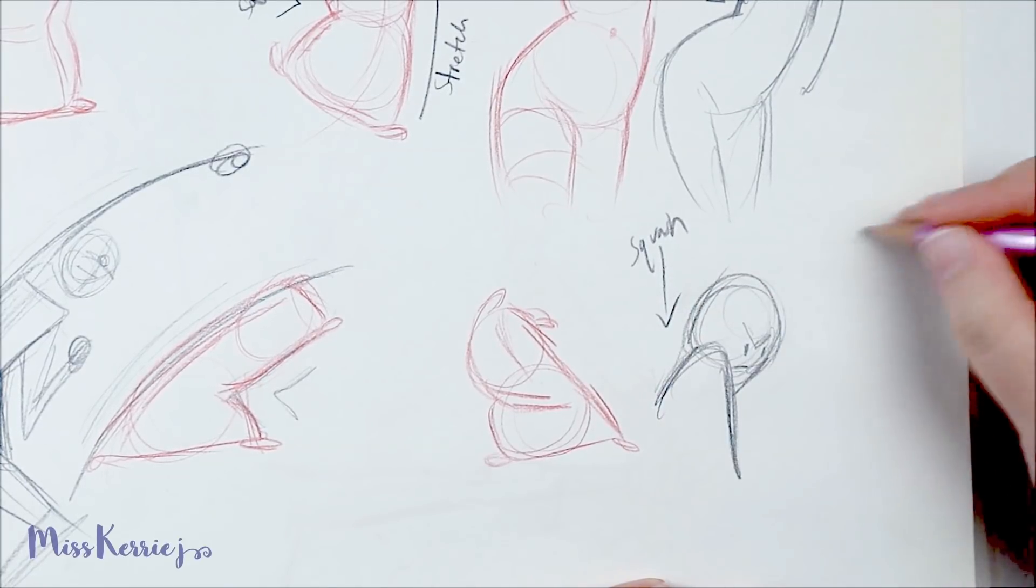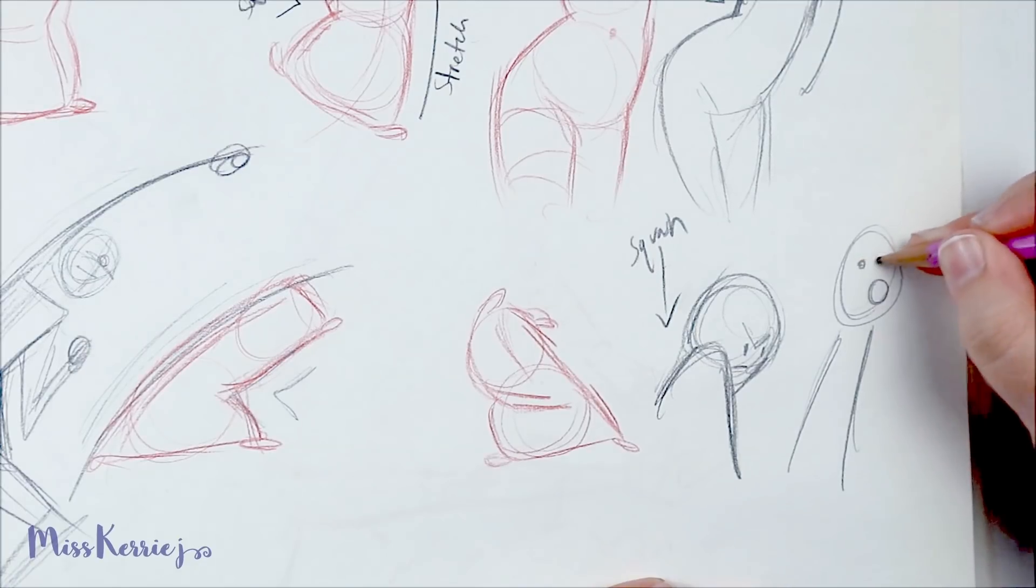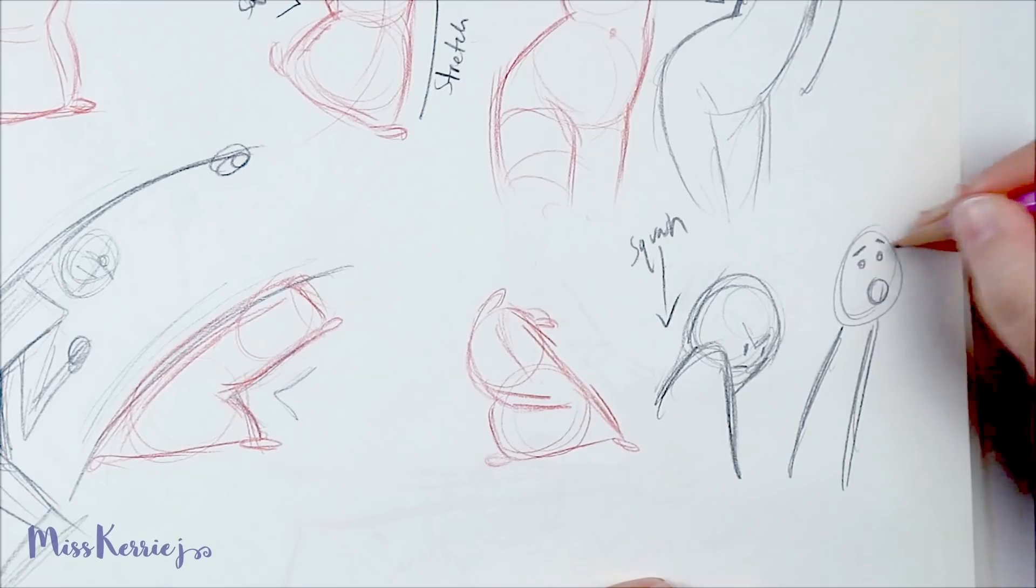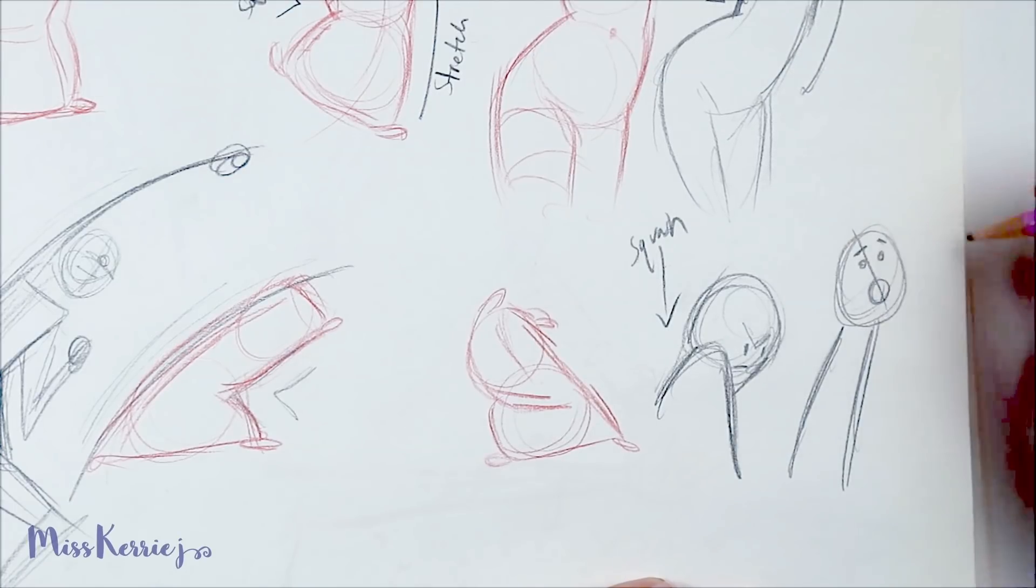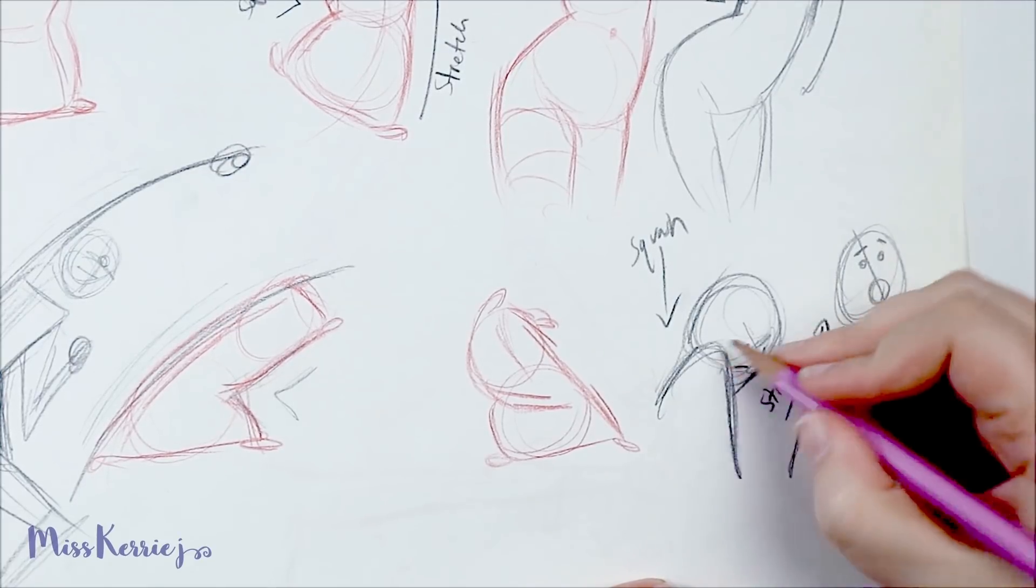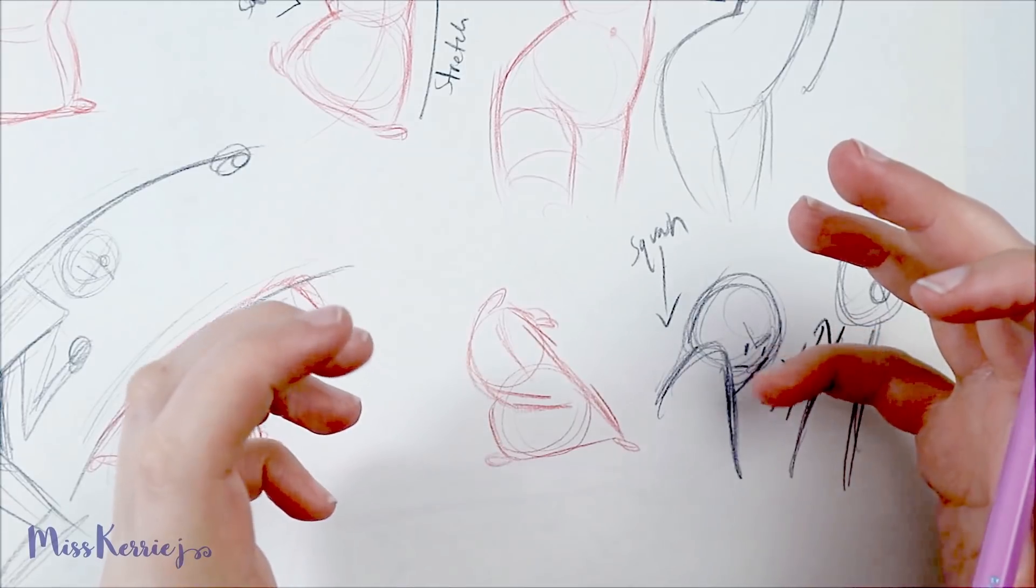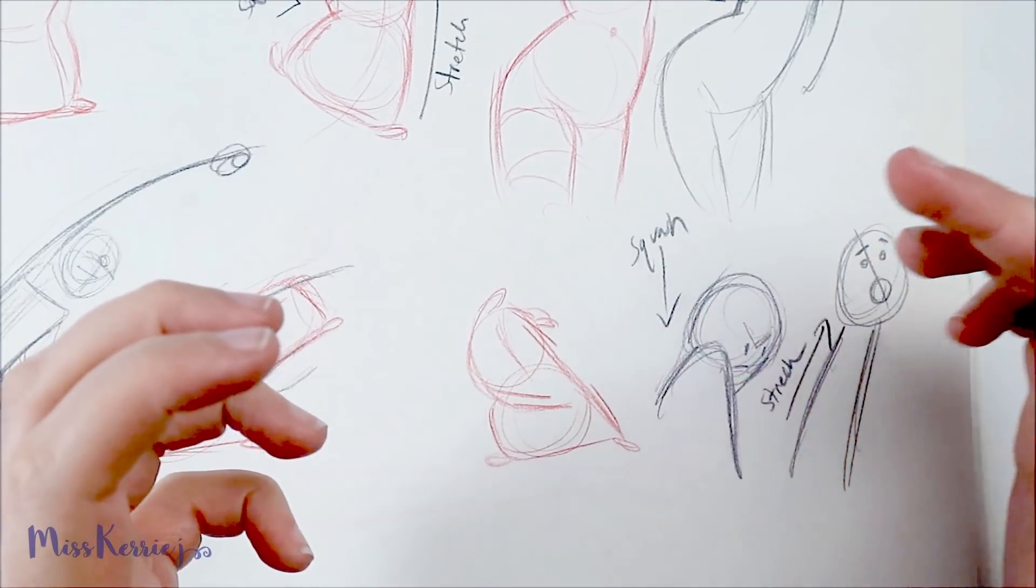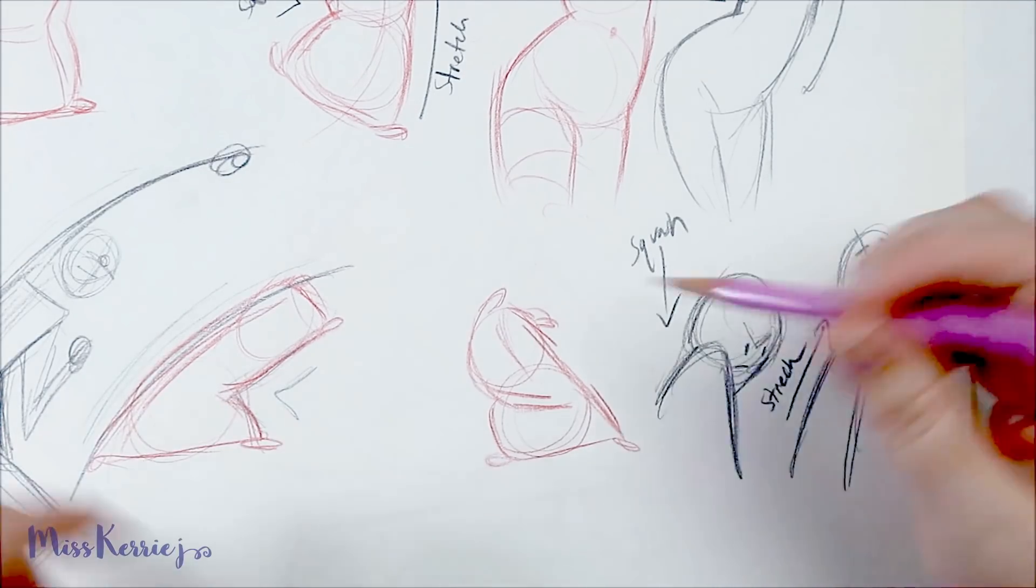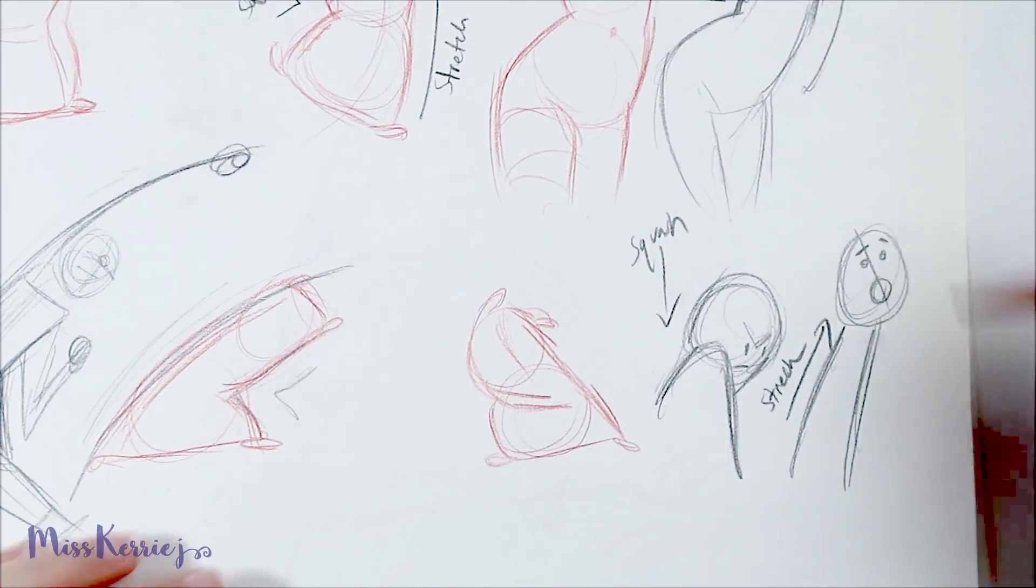If I wanted to take this to the next level, if I was animating this for instance, this could be the same human person, and this would be your stretch. Squashing and compressing the form is a way to show you're upset or angry or tired, and stretching out a pose can show surprise or interest or being active.